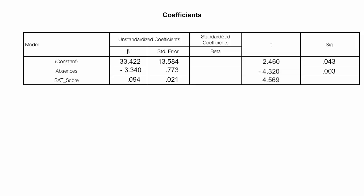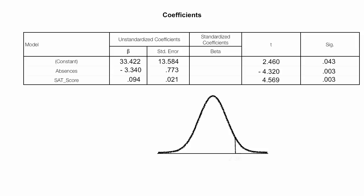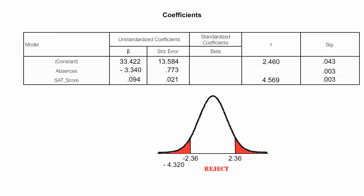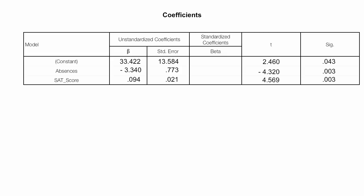The last column is significance — it's the same as the P value. I could draw a bell curve for hypothesis testing, with critical values at 2.36 and negative 2.36 as the rejection regions. If my T score falls in the rejection region, I reject the null hypothesis. But in the end, I really don't have to do that work, because if my P value is less than 0.05, I reject — no bell curve needed.